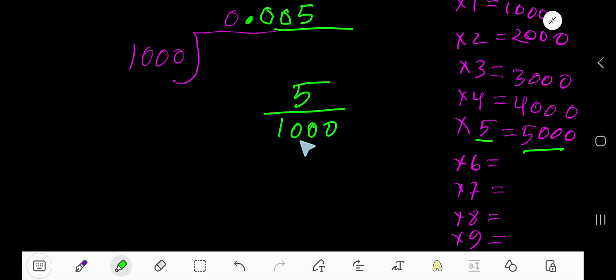Then write the numerator and count the number of zeros: 1, 2, 3. The decimal point will come here – 1, 2, 3. The decimal point will move from right to left 3 digits.